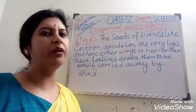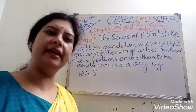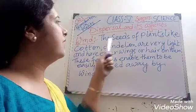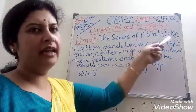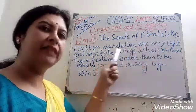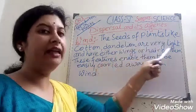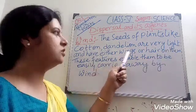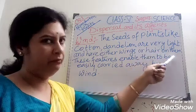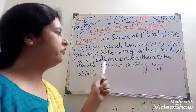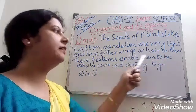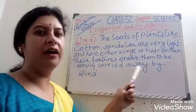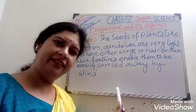Now we are going to discuss all the agents one by one. First, wind. The seeds of plants like cotton and dandelion are very light and have either wings or hair on them. These features enable them to be easily carried away by wind.